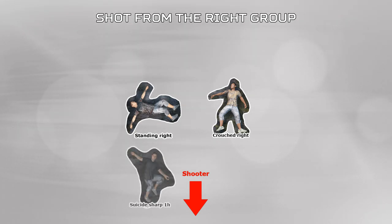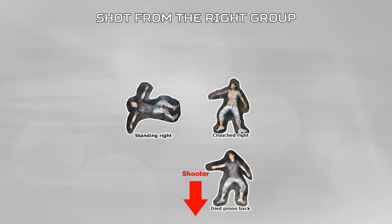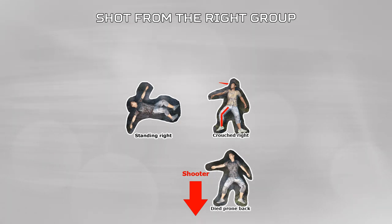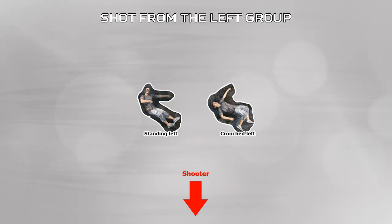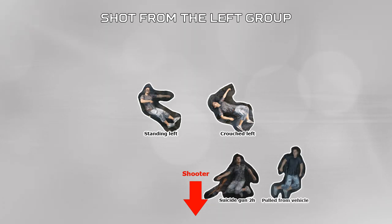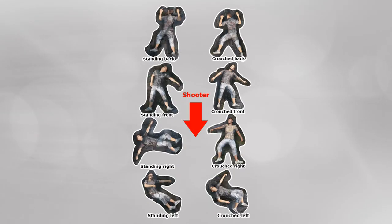Being shot from the right while standing is easy to determine because you will look like you've just been crucified in your death animation, remembering that the shooter's position is in the direction of the red arrow. Only one other animation looks like you're being crucified, which is the sharp one-handed melee weapon suicide, and you will find a sharp one-handed weapon nearby anyway. Death from the right while crouched is more difficult, because it is very similar to the prone on your back death animation. However, dying on your back is very rare in DayZ, and a difference can still be determined with the legs — if the bend in the leg is on the side the player is facing, it's death from the right side while crouched. The killed from the left side group is much easier, due to the standing one being the only animation close to a dab, where both arms point in the same direction. The crouch death from the left side has both legs crunched up, which is also very easy to determine, and is only similar to the two-handed gun suicide and the pulled-from-vehicle animation.